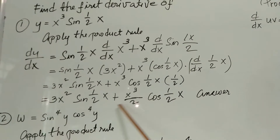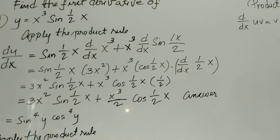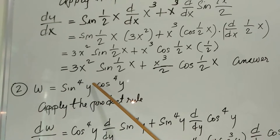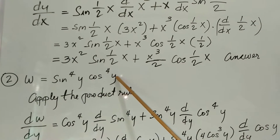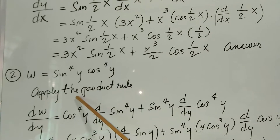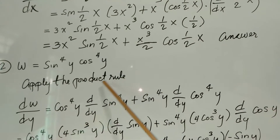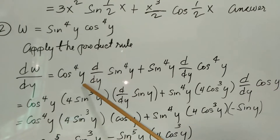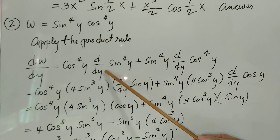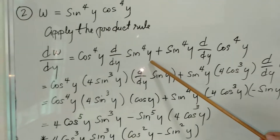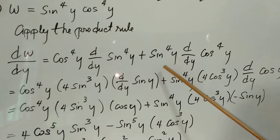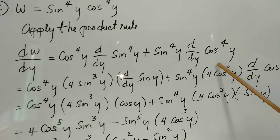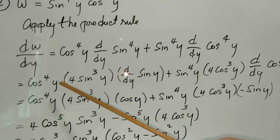For our second exercise, w equals sine to the fourth y times cosine to the fourth y. Similarly, we apply the product rule. So dw over dy equals cosine to the fourth y times the derivative of the first term, sine to the fourth y, plus sine to the fourth y times the derivative of the second term, cosine to the fourth y.